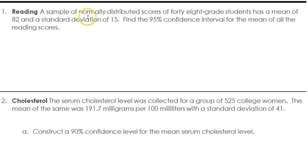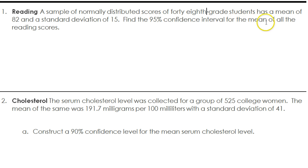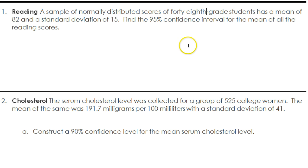A sample of normally distributed scores of 48th grade students has a mean of 82 and a standard deviation of 15. Find the 95% confidence interval for the mean of all the reading scores. So if we want to be 95% confident that the real reading scores are somewhere in the interval for everybody — not just the sample — we can use the new formula for margin of error.